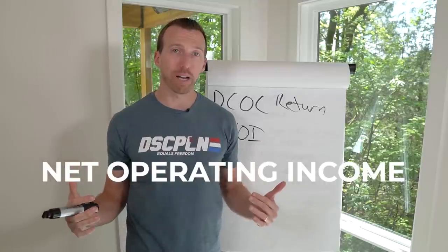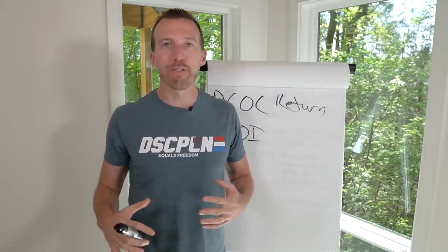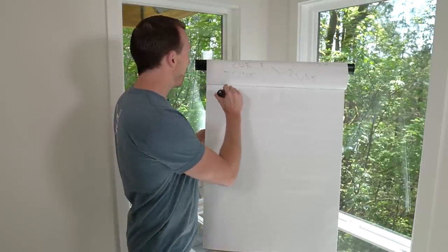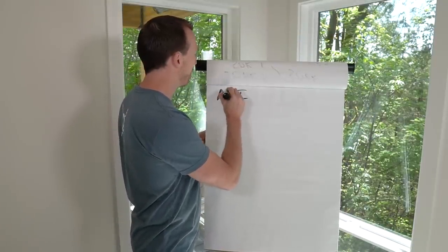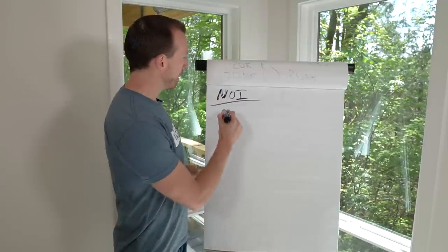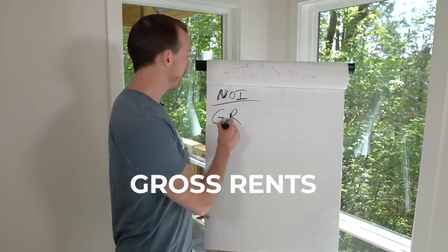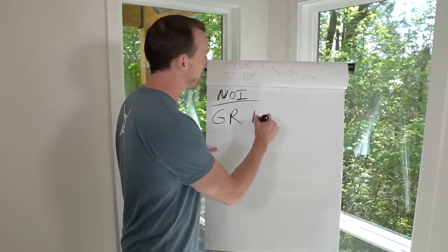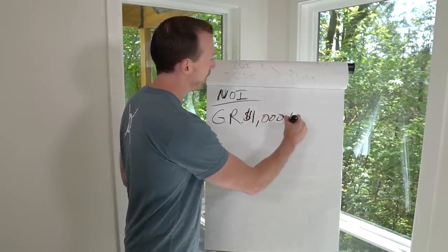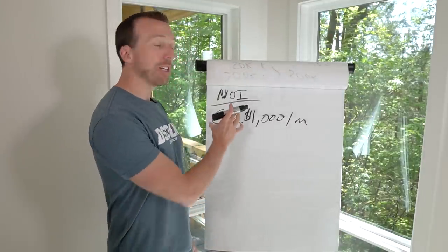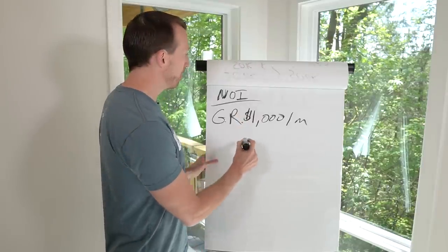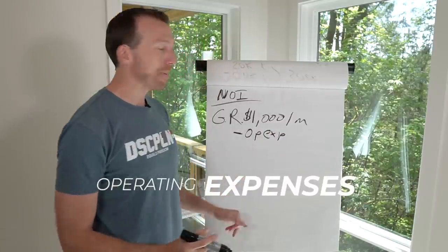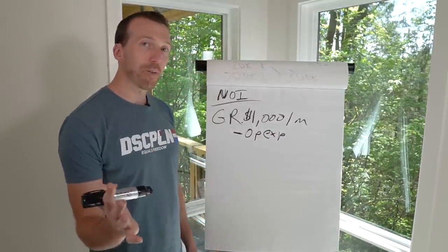NOI is really simple. We're going to take our gross rents — let's say gross rents monthly on this property are $1,000 a month. In order to finish calculating NOI, we're going to subtract all operating expenses. Let's figure out what operating expenses includes: property management, taxes, CapEx (capital expenditures — big items like your roof that breaks down), maintenance, and vacancy.